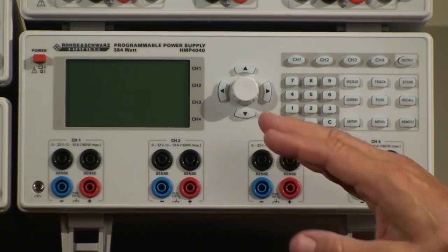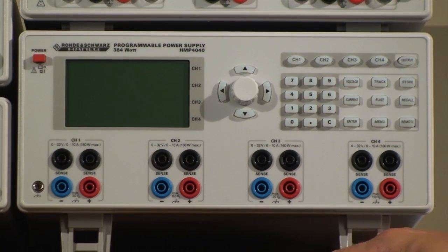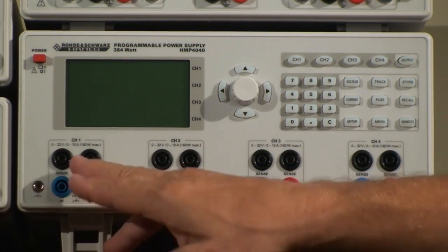This is the Hameg programmable power supply, a four-channel programmable power supply capable of delivering up to 40 amps, 10 amps on each of the channels with a maximum of 32 volts.